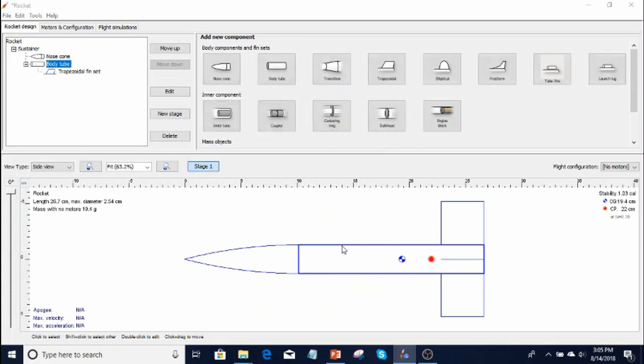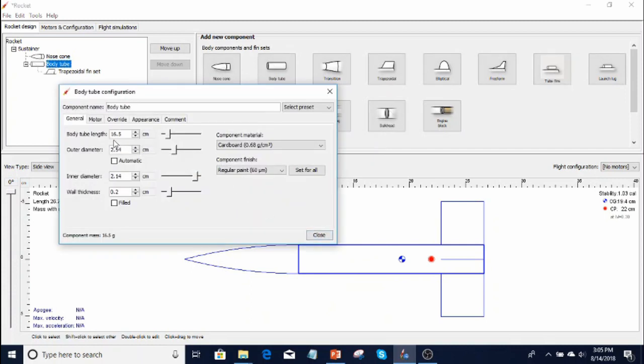The body tube is very simple: 16.5 centimeters in length and about 2.54 centimeters in diameter.